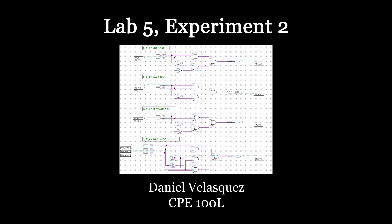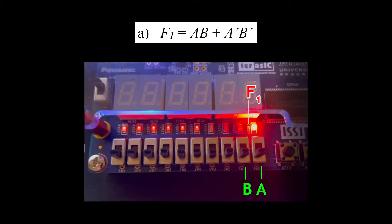In experiment 2, I programmed four functions in one schematic. For F1, switch 0 represents input A, switch 1 represents input B, and LED R0 represents output F1.